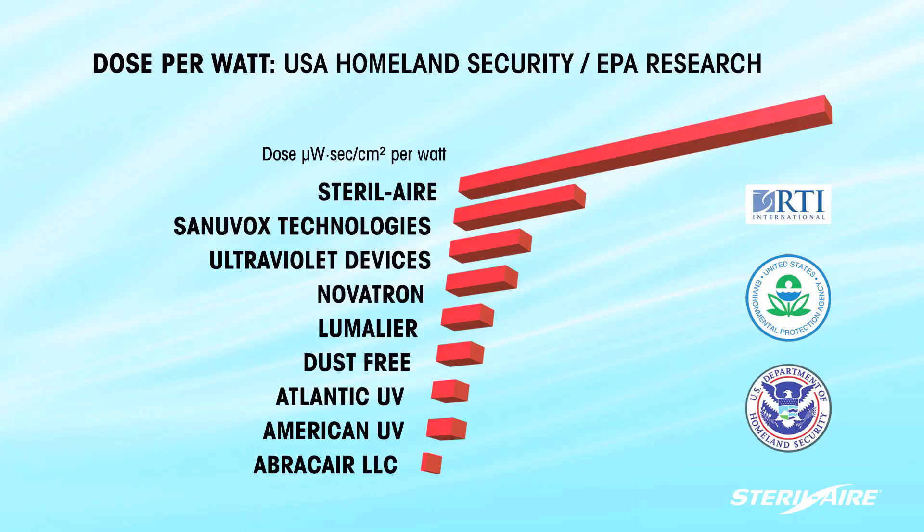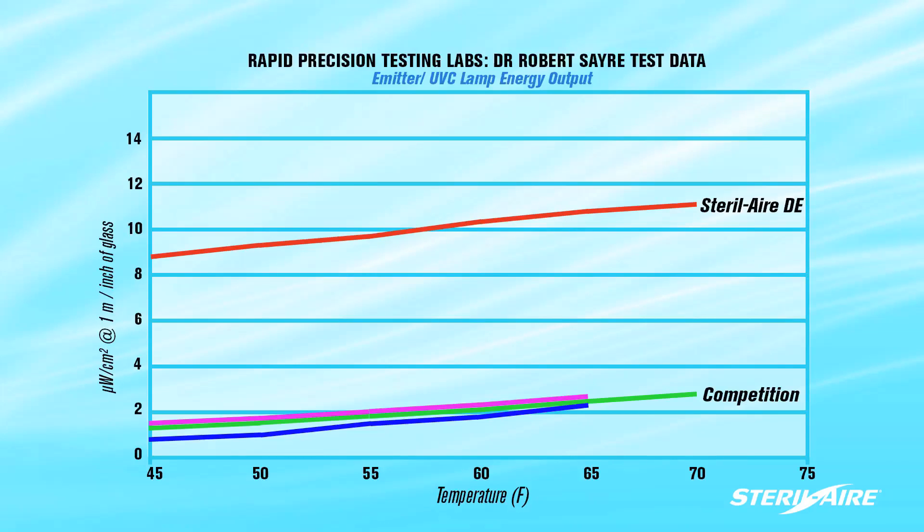The U.S. EPA Homeland Security Test shows that sterile air's output on a dose per watt basis far exceeds that of the competition along with a number of independent tests.